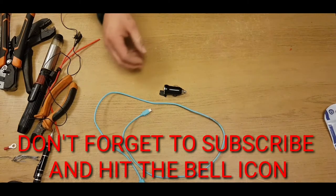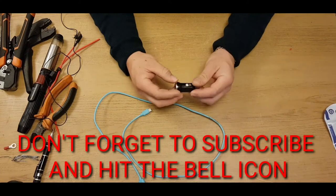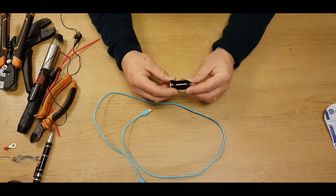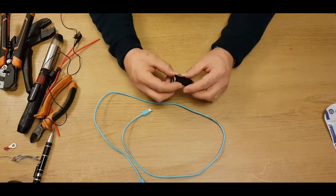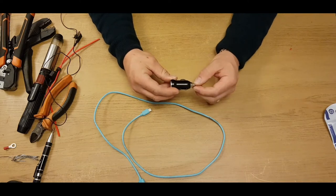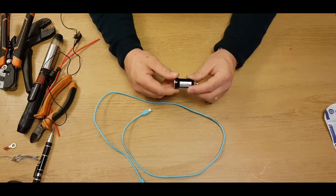So in this video I'm going to show you how to take a standard USB car charger like this and make it so you can use it to hardwire in a sat nav, a dash cam, or a mobile phone charger.